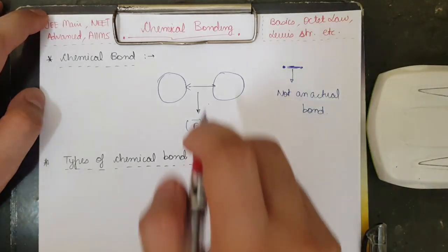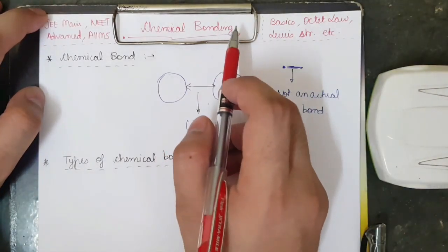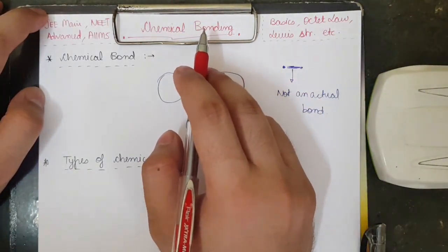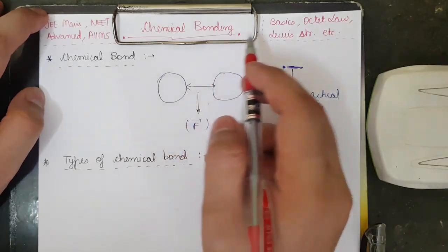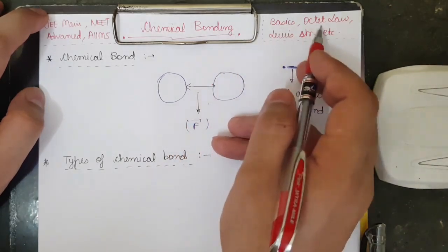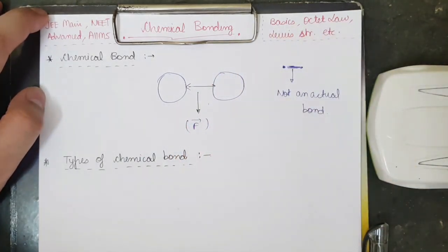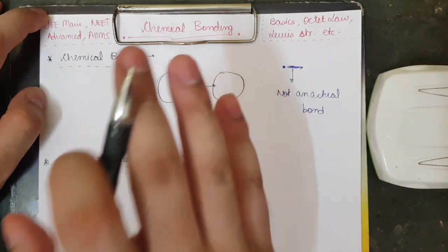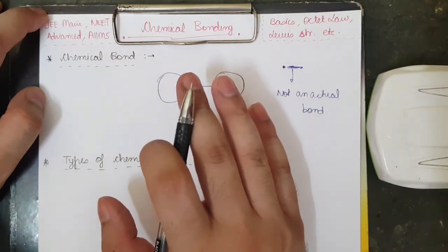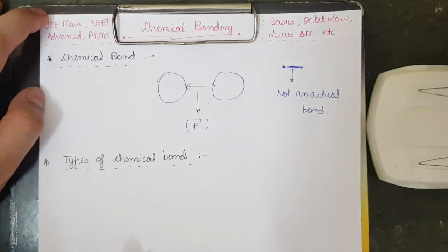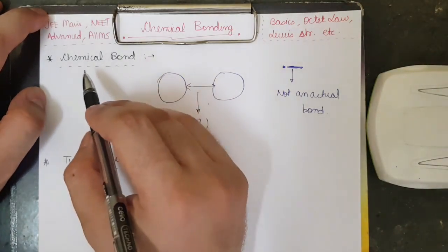Hello everyone, welcome to my new series on chemical bonding. In this first video we will discuss basics, octet's law and Lewis dot structures. Please make sure you understand it very well — I will explain everything logically. Watch the whole video and make sure you subscribe to the channel.